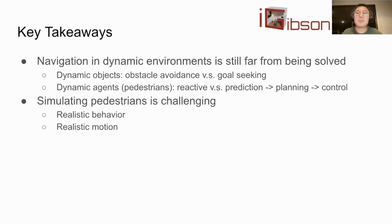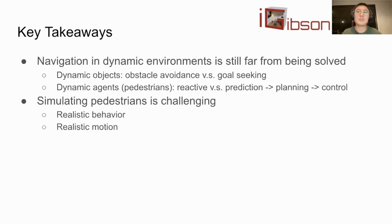Secondly, simulating pedestrians is super challenging. Although we made a significant first step to incorporate photorealistic humans into the iGibson 3D environment, there is still a lot that needs to be done. Currently our pedestrians are just walking around in the scenes. It will be very interesting to model realistic human behavior in homes, such as talking in a circle, sitting on the couch, or interacting with home appliances. It will also be interesting to simulate realistic human motion with limbs moving, and we have already seen exciting research along this line in the computer graphics community.